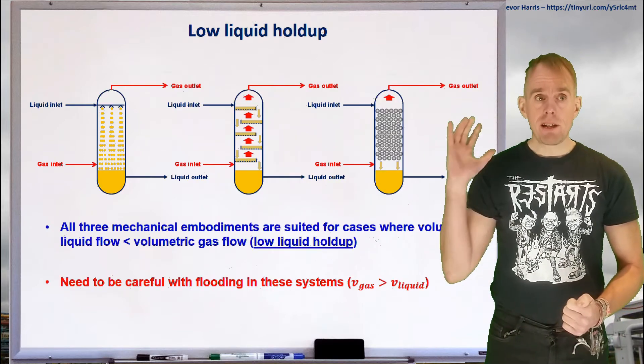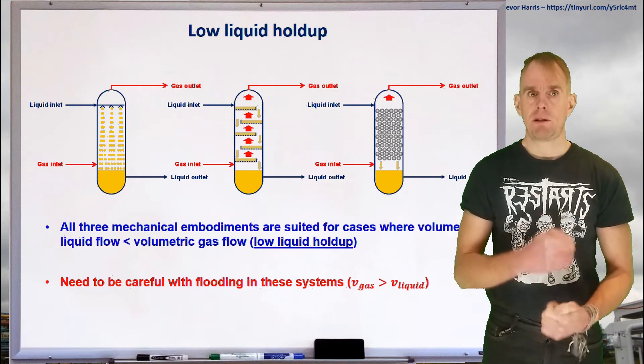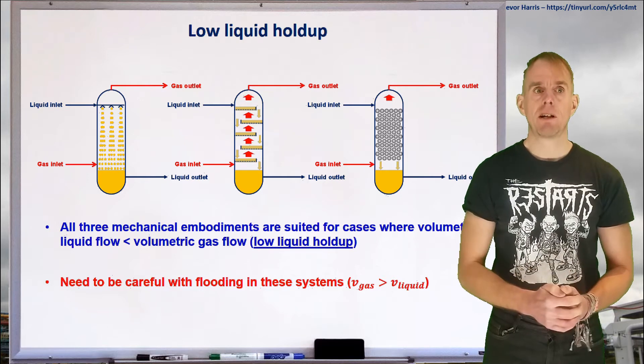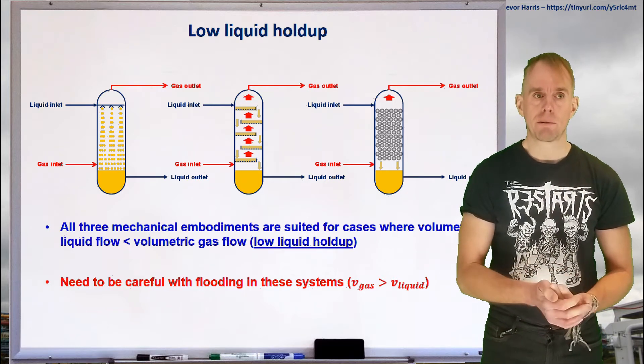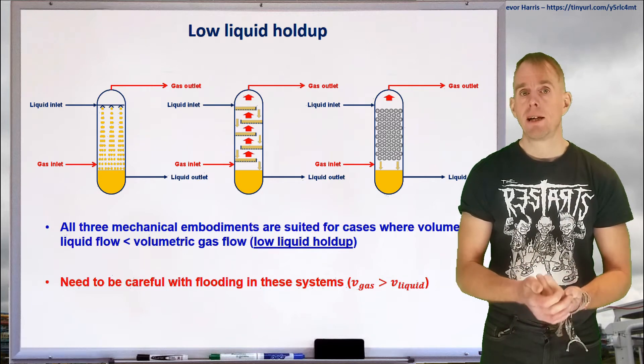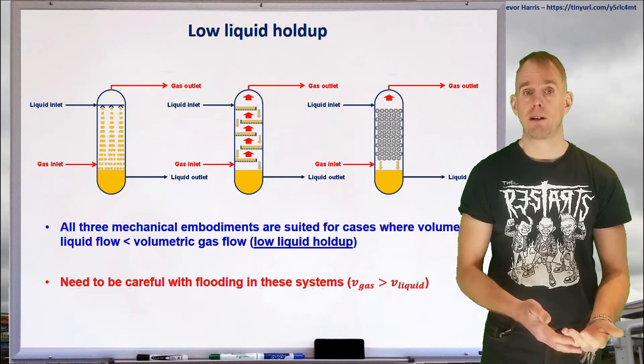So these three design embodiments—your spray tower, your tray tower, and your packed tower—are very good for systems what we term low liquid holdup. That's where your volumetric liquid flow is a lot less than your volumetric gas flow.